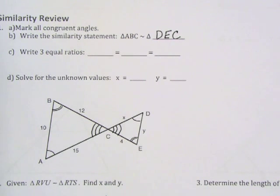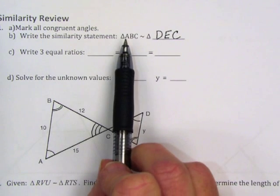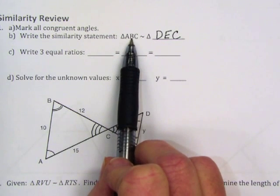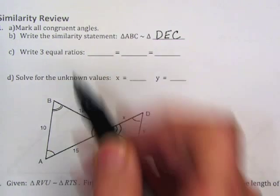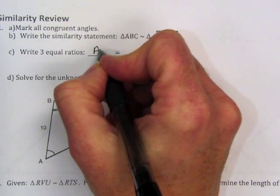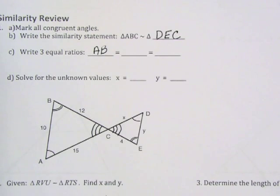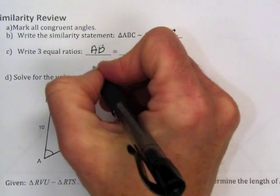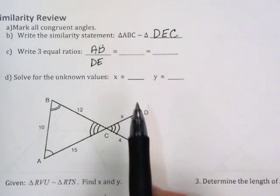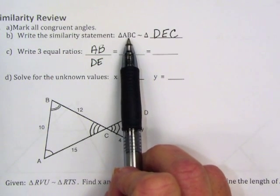Once we have our similarity statement, we can write three equal ratios using the sides of each triangle. So again, this is a review. We will look at the first two letters, AB, so that corresponds to side AB in the figure. And side AB corresponds to the first two letters here, DE.